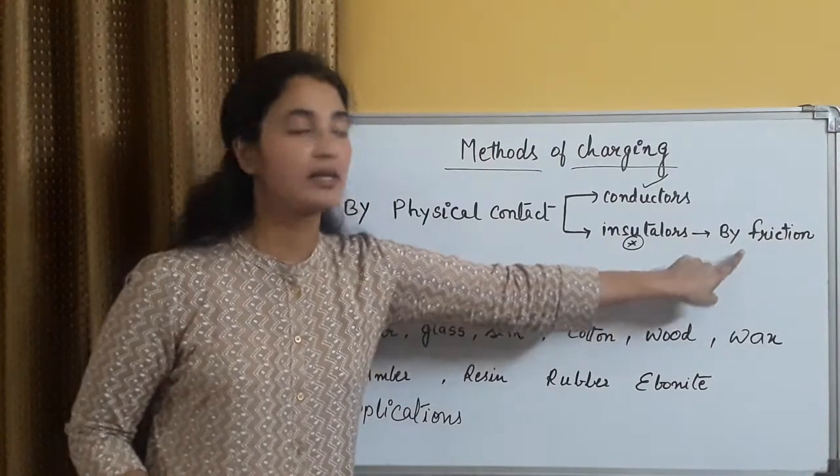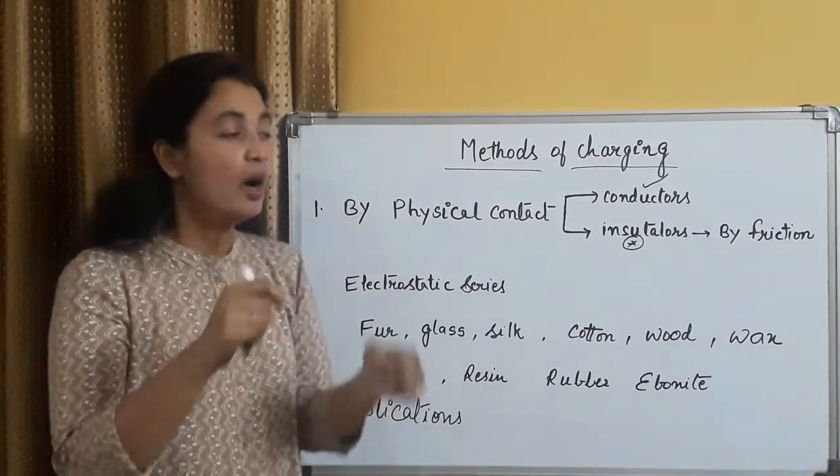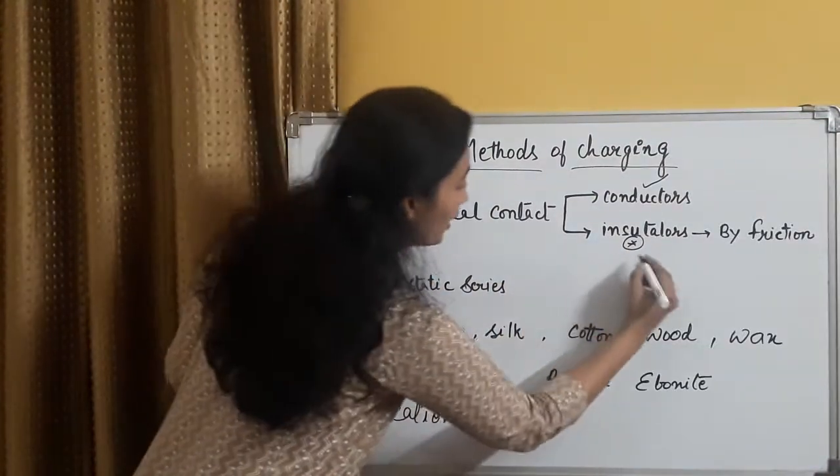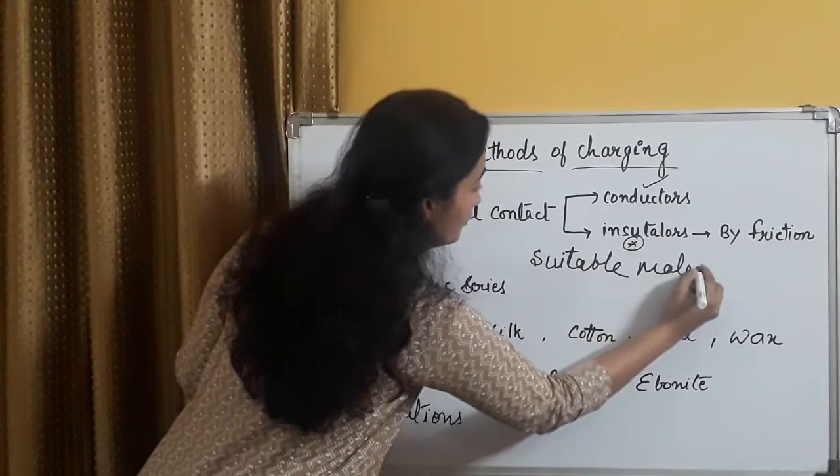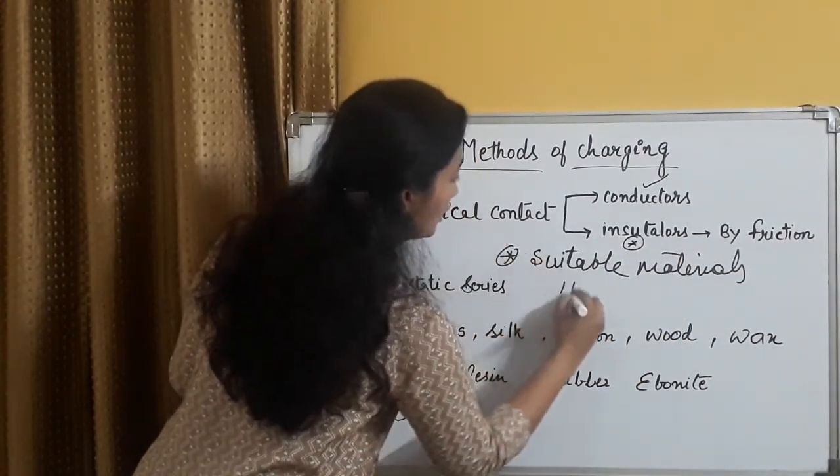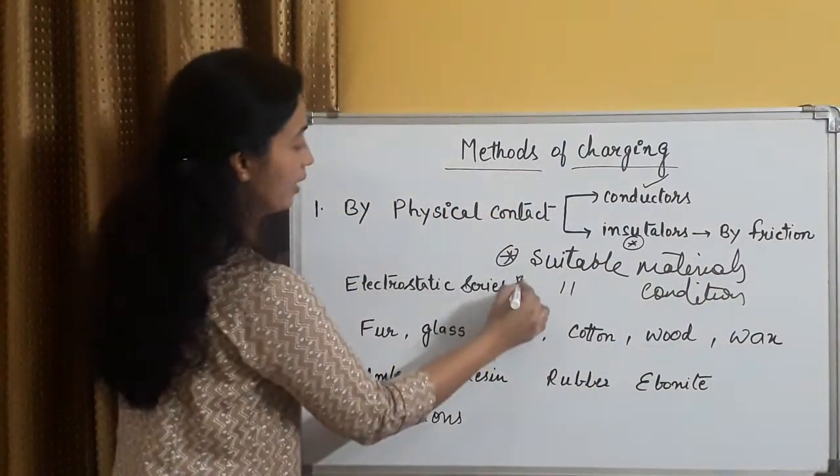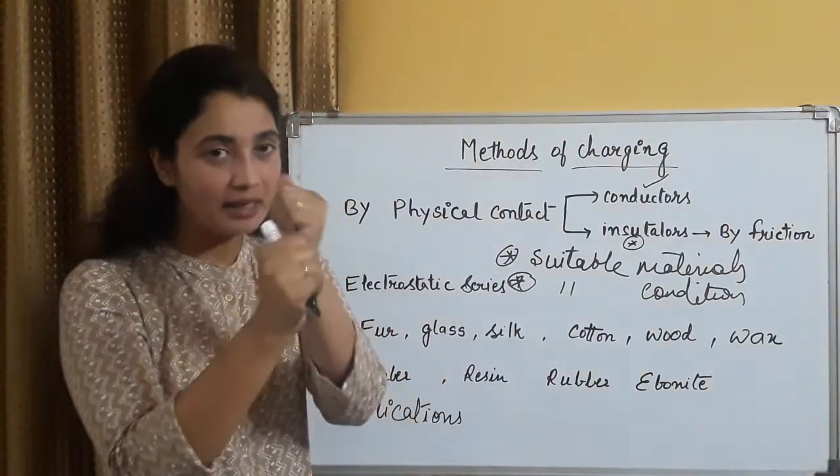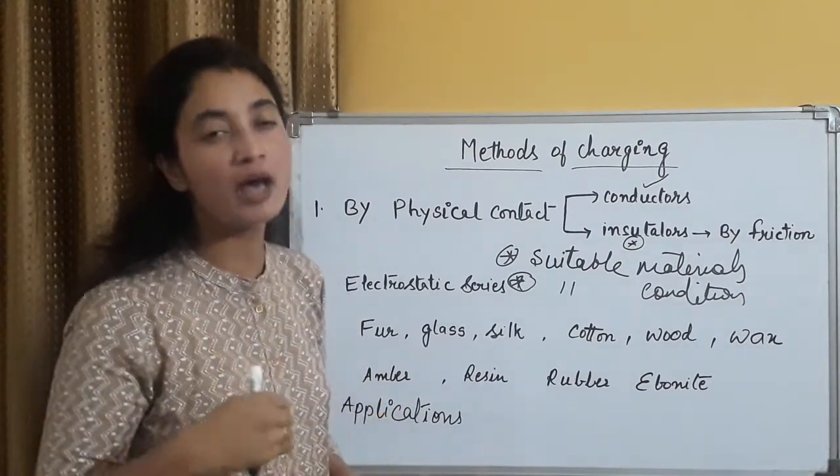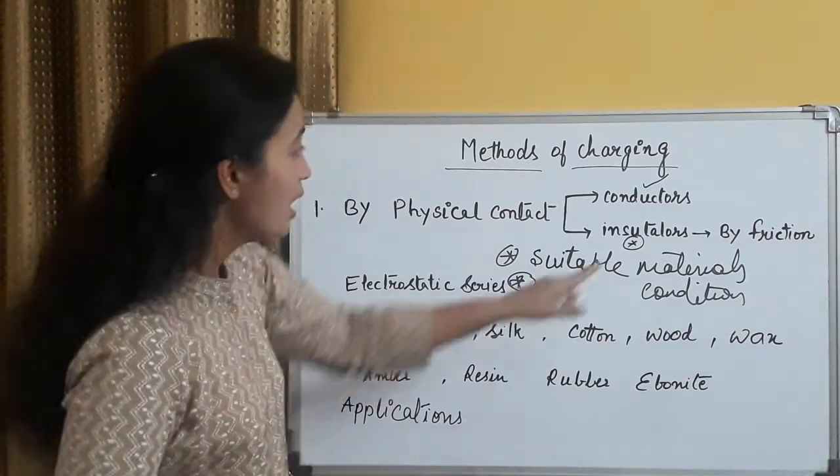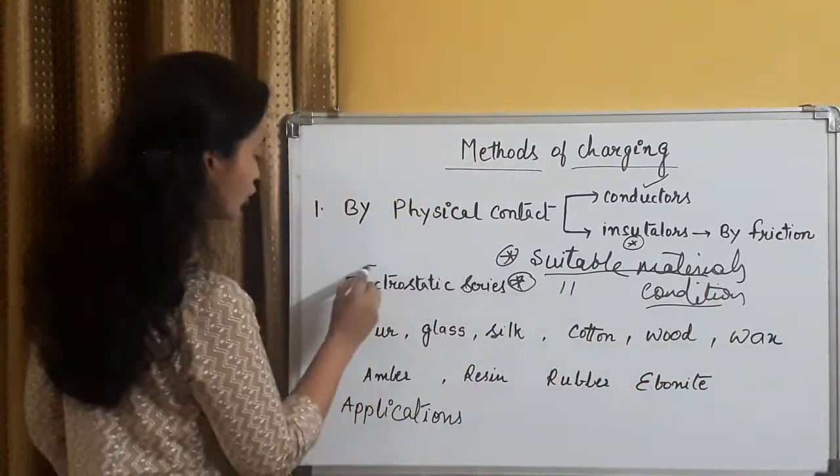Second thing, is for insulators, yad rakhiye, humare liye thoda point of interest rahega. Insulators hai, jin ke paas bohut saare free conductors, ya free electrons nahi hai, then how can we charge them? Physical contact ke do parts hai, conductors, insulators. Insulators ke liye, jo method hum use karte hai, yeh aapko already malum hai, this is friction, by friction, by rubbing two materials, jiske andar mein zarur use karna chahti hoon, by rubbing two suitable materials, suitable materials, and second thing I want to add, suitable conditions.